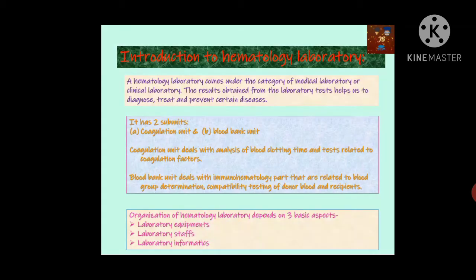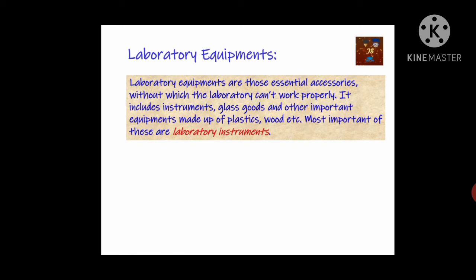Laboratory informatics means each and every laboratory in a particular hospital is related to a particular department, and all these departments are interconnected to run the hospital properly. Laboratory equipments include instruments such as microscope, hemocytometer, and hemoglobinometer, as well as glassware like measuring cylinders, beakers, and pipettes, and other important items like blood collection tubes and plastic racks used to hold samples.